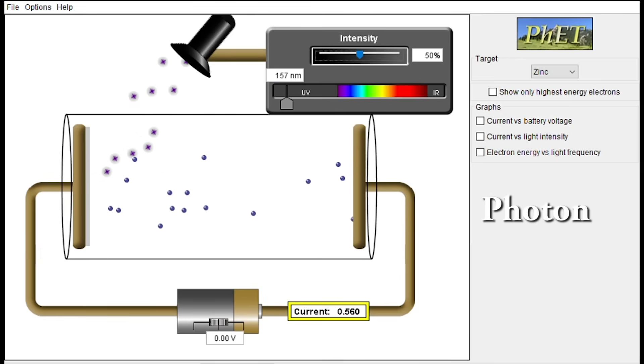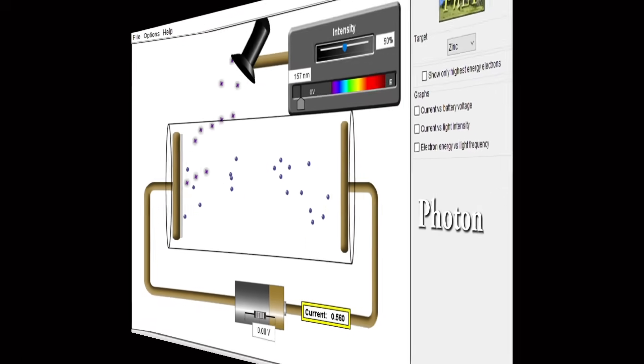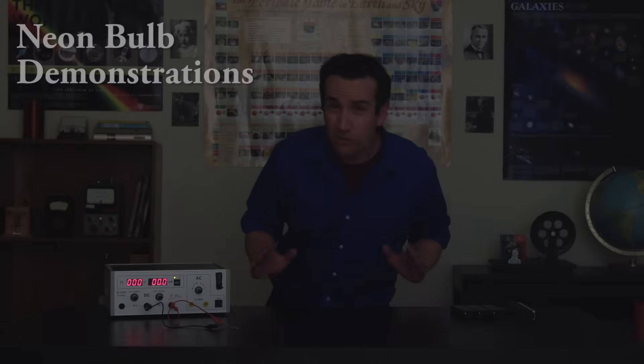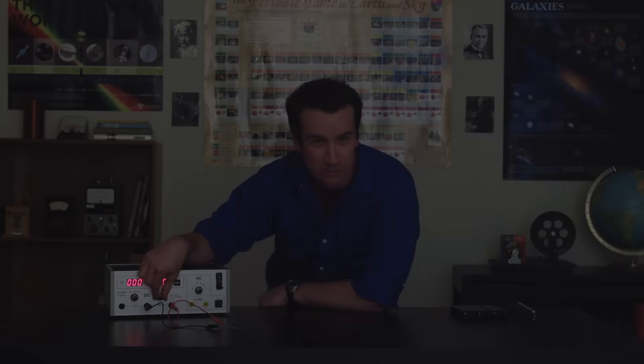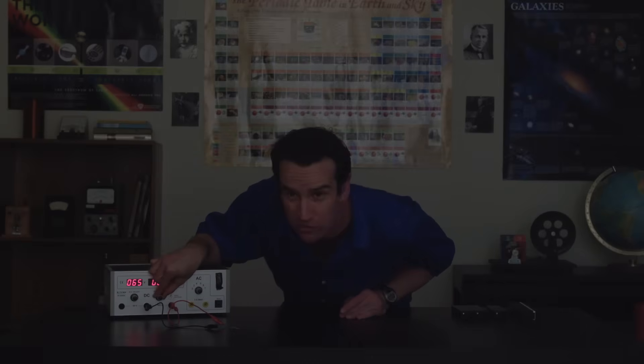It's also possible to demonstrate the photoelectric effect with a small neon bulb. These will turn on at about 70 volts. Once you find its turn-on voltage, dial it back to where it's just about to turn on, and then shine a blue light on it.